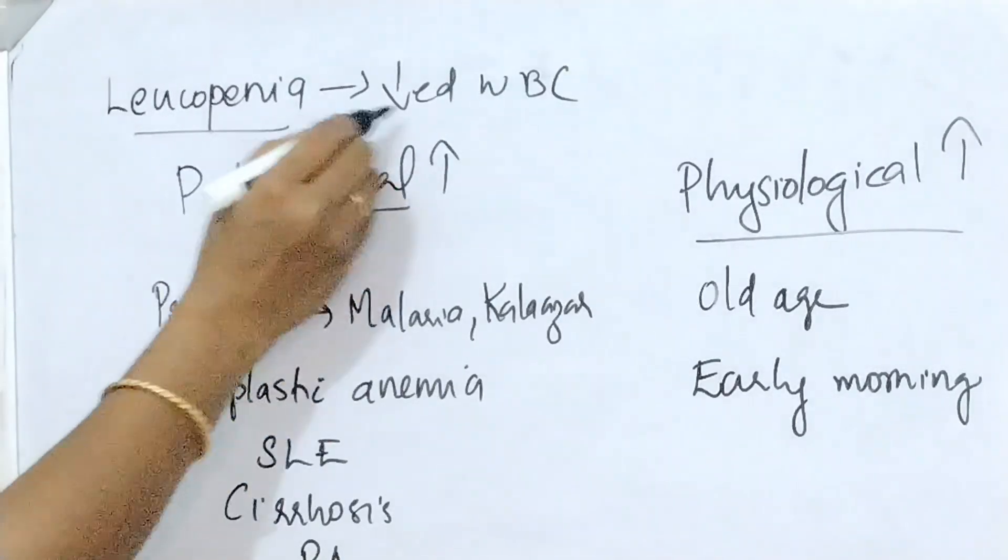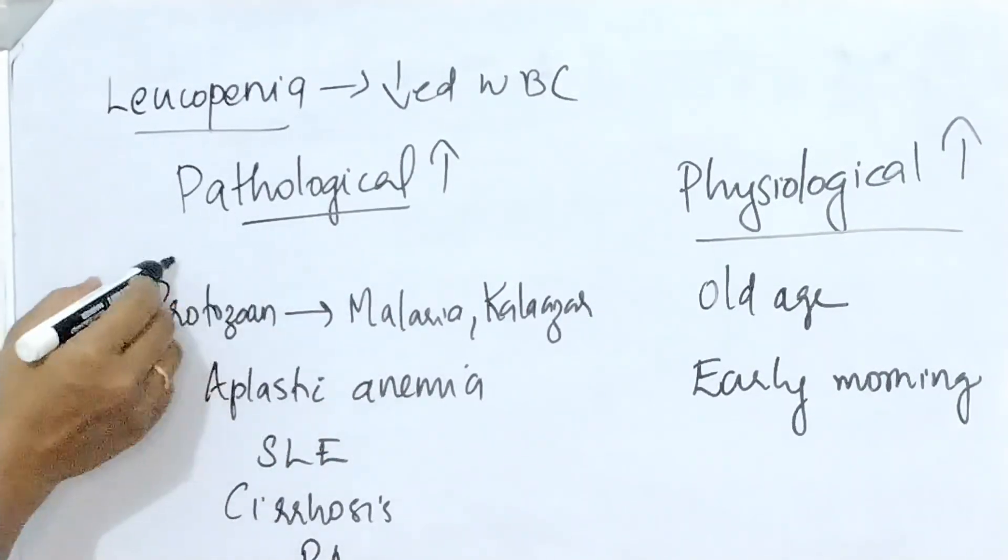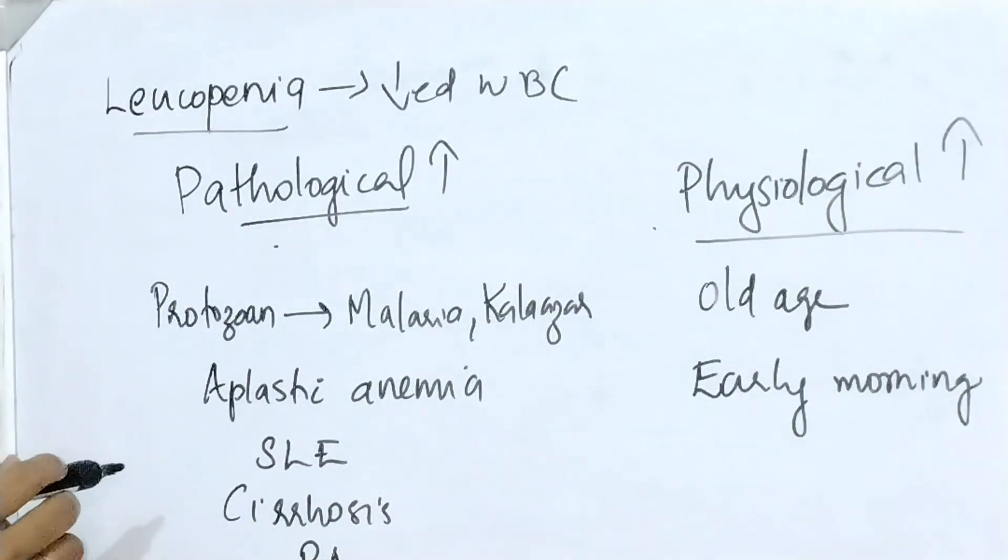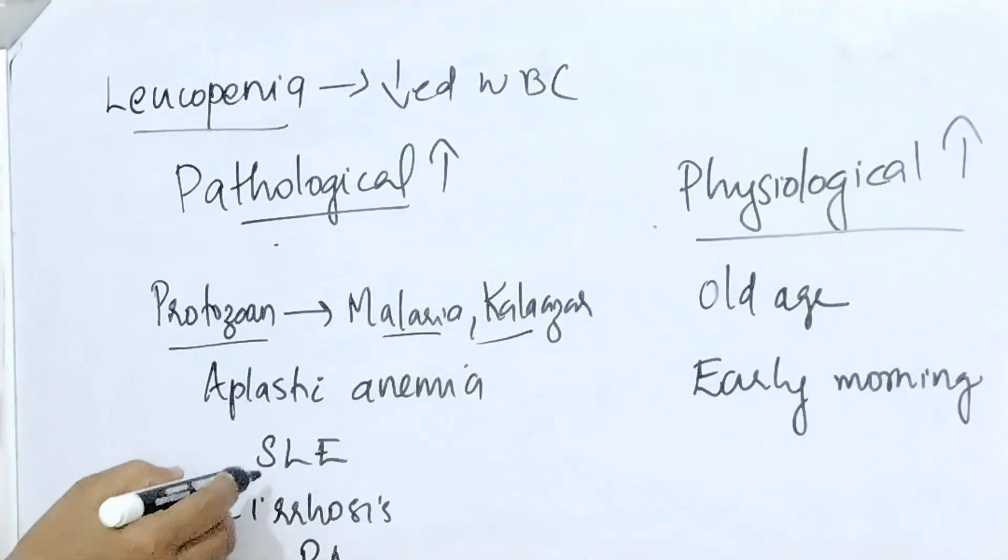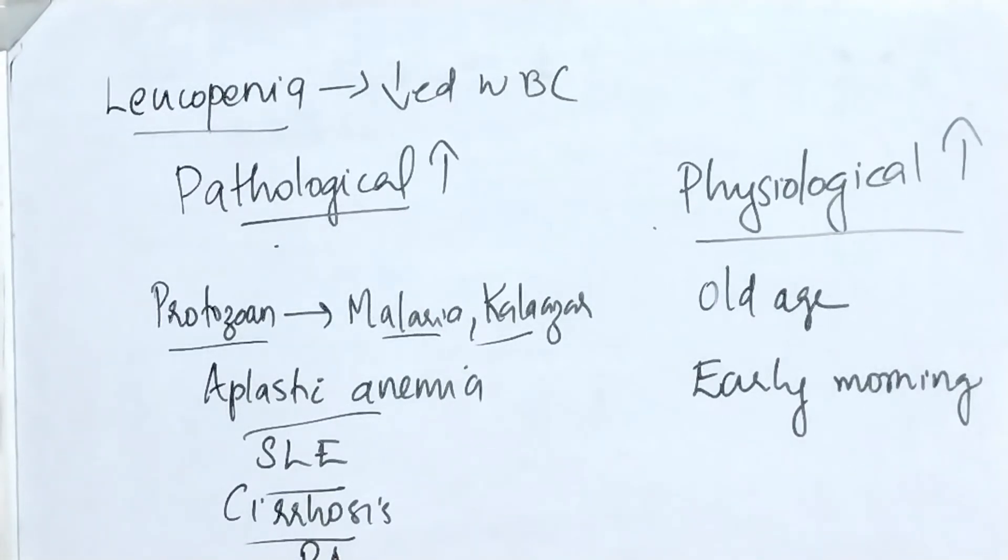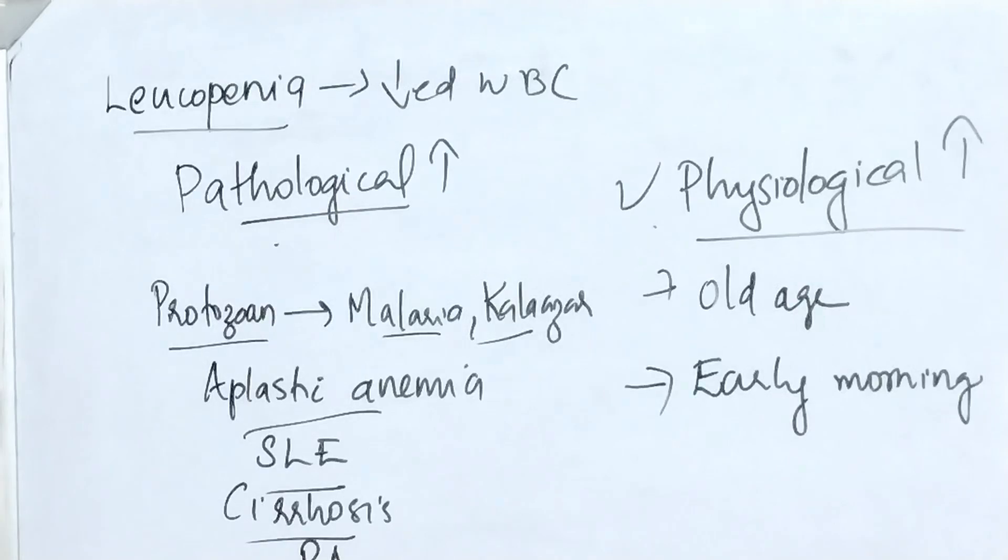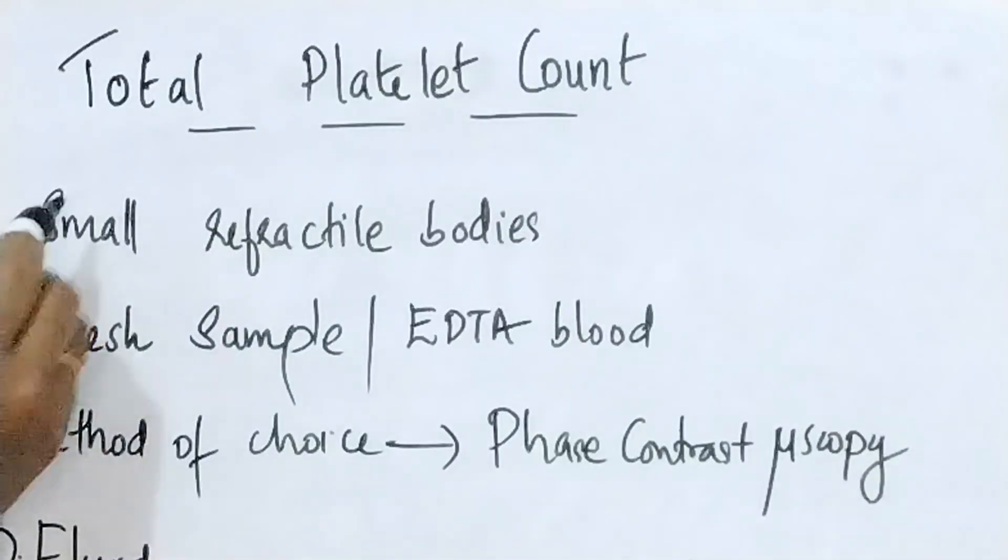Next is about leukopenia. Leukopenia is decreased WBC count. It is also pathological and physiological. Pathological condition include protozoan infections like malaria, kala-azar, aplastic anemia, SLE, cirrhosis, rheumatoid arthritis, etc. Pathological decrease, not pathological increase. And also physiological decrease. It is old age and in early morning.